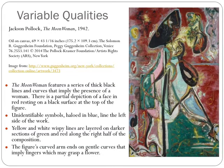In contrast to Circumcision, the Moon Woman, also by Pollock, features a series of thick black lines and curves that imply the presence of a woman. There is a partial depiction of a face in red resting on a black surface at the top of the figure. There are unidentifiable symbols, haloed in blue, along the left side of the work. Yellow and white wispy lines are laid on darker sections of green and red along the right half of the composition, and the figure's curved arm ends with gentle curves that imply fingers, which may be grasping a flower.